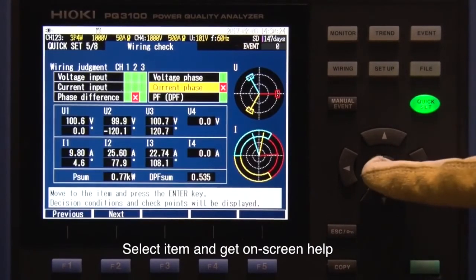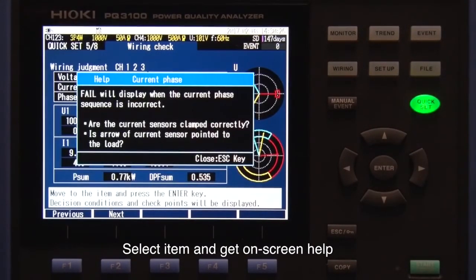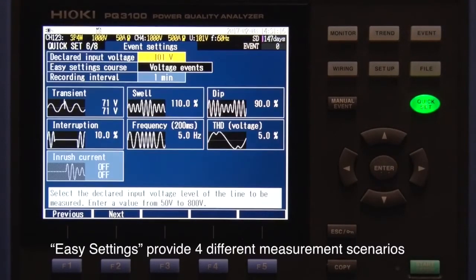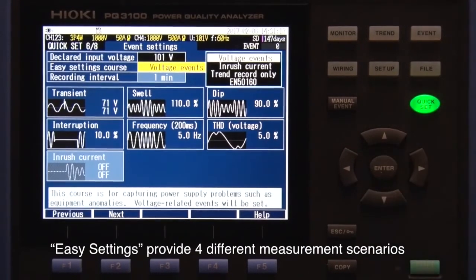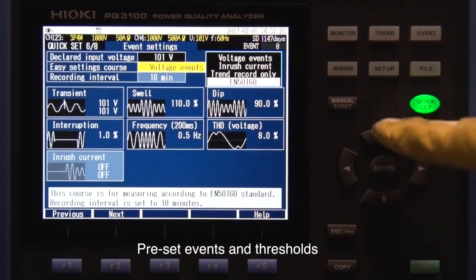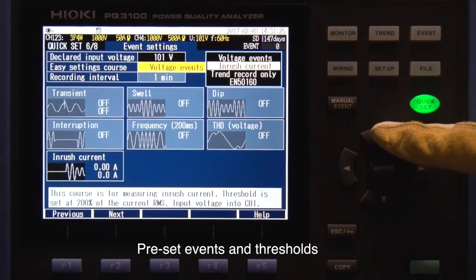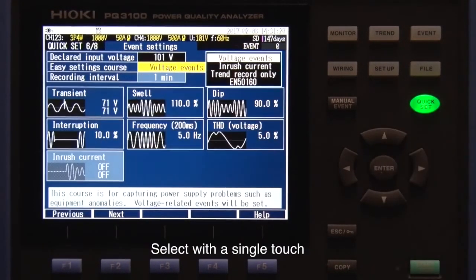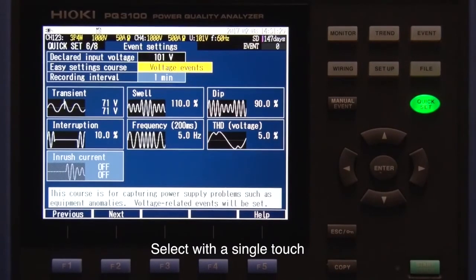Select the items you want to adjust and get tips on how to fix the problems. Within the quick set function under easy settings, you can choose from several different measurement scenarios. The screen shows the threshold set for each parameter. Simply select the scenario with a single touch.